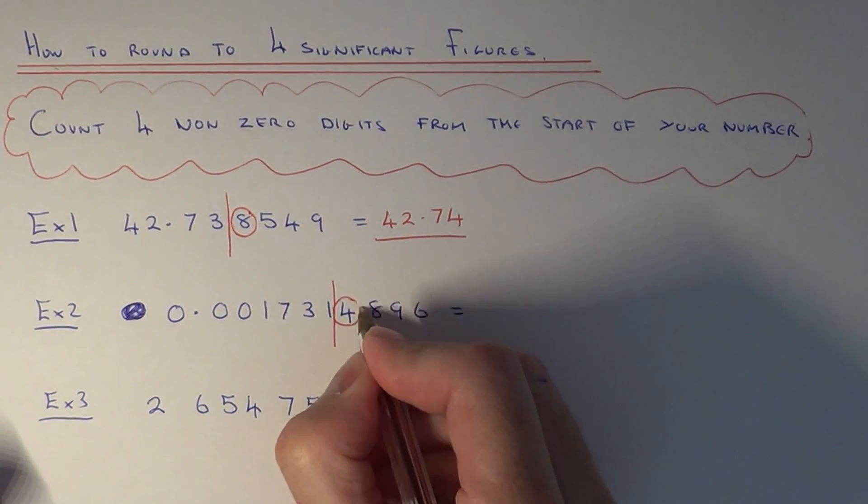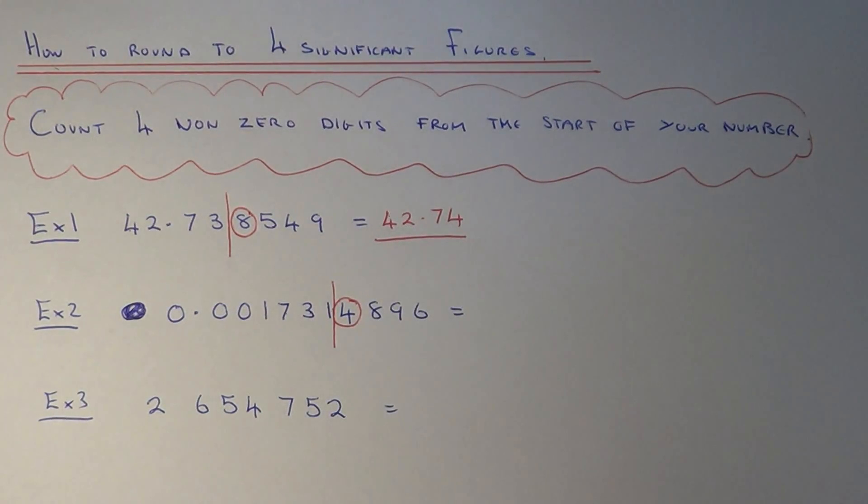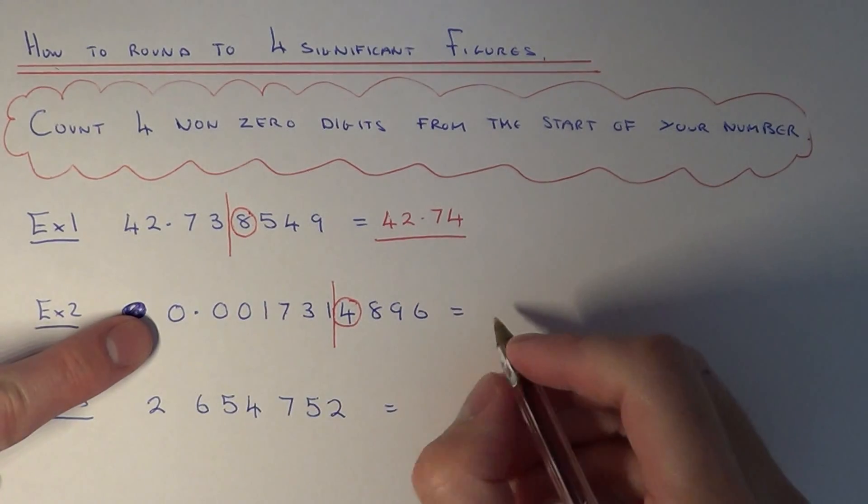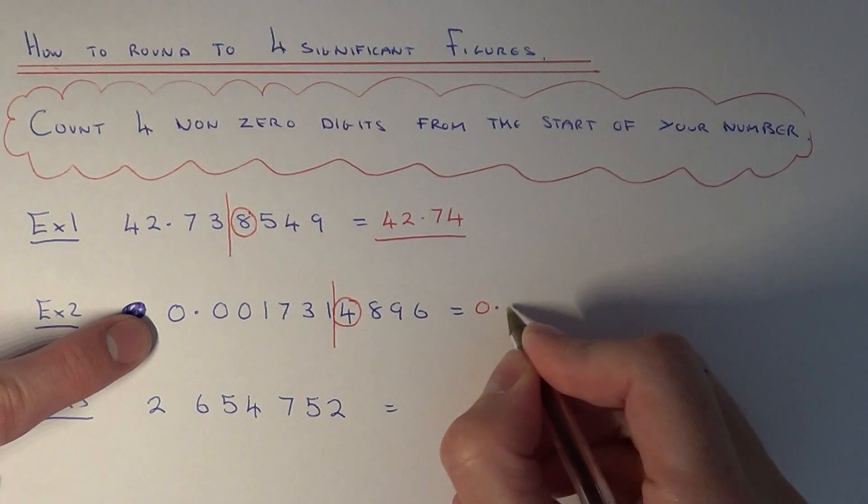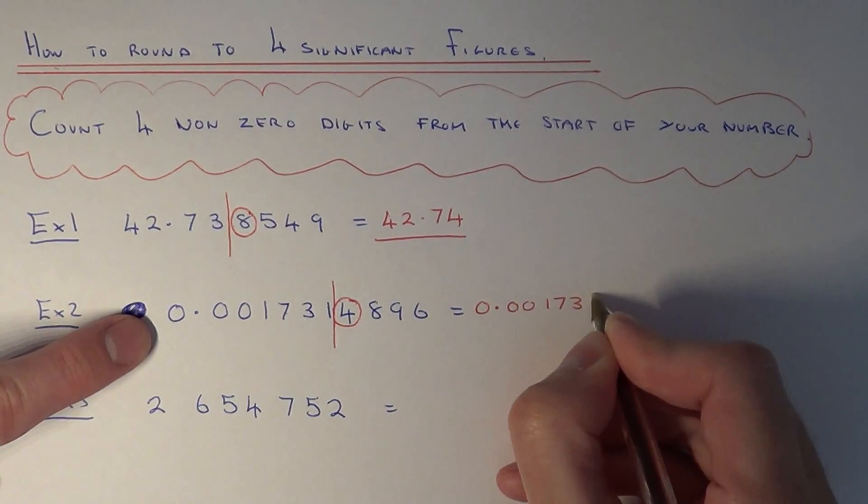If we look at the number after the line, which is a four, if it's less than five, remember you round the number down. So this means our answer is closest to 0.001731.